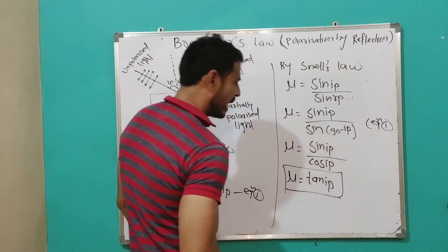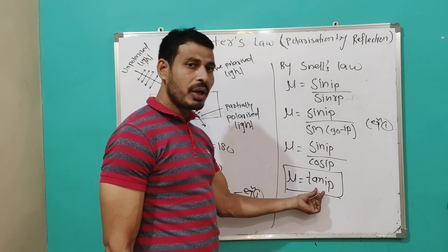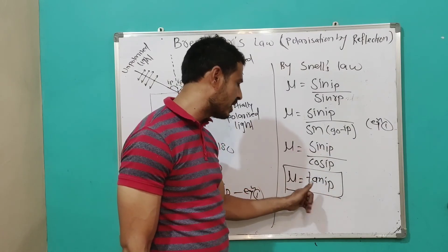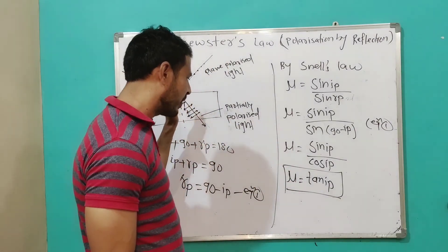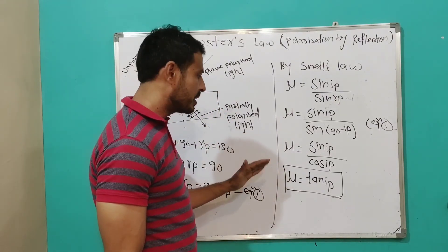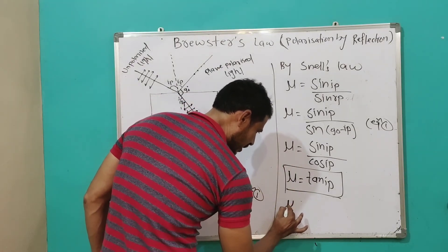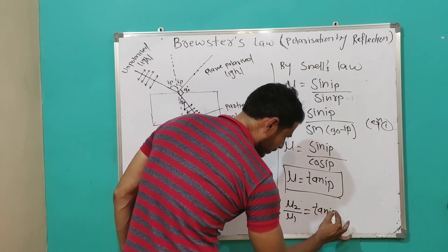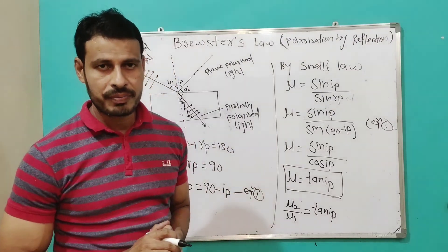Therefore, the refractive index is equal to tan(IP). This is the proof of Brewster's Law: the tangent of the angle of polarization equals the refractive index of the refracting medium, that is mu2 / mu1 = tan(IP). This is about Brewster's Law.